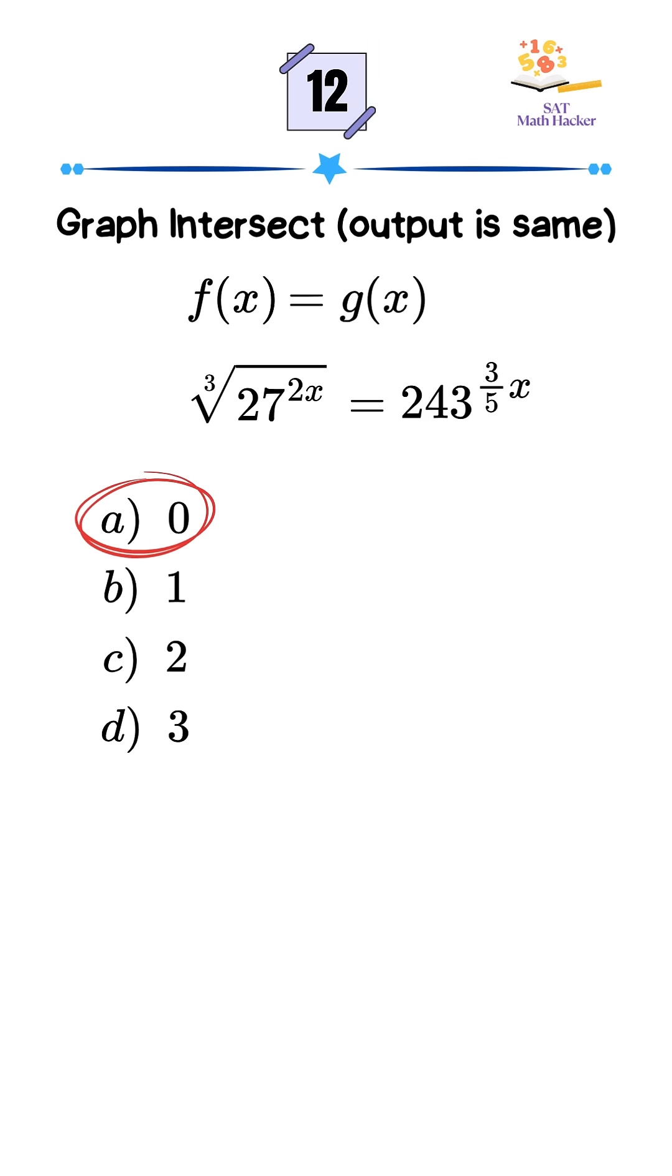Let's test option A, x equals 0. Substituting into both sides, we get the cube root of 27 to the 0 on the left and 243 to the 0 on the right.